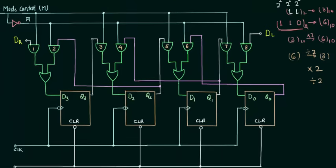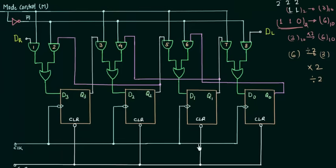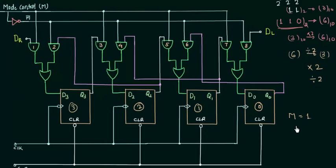Now we will move to the circuit and see how we can have the bi-directional shift register. I have used 4 flip-flops: flip-flop number 3, flip-flop number 2, flip-flop number 1, and flip-flop number 0. There is a combinational circuit and the mode control input M is also used. When M equals 1 we have the shift right operation.